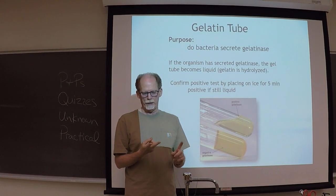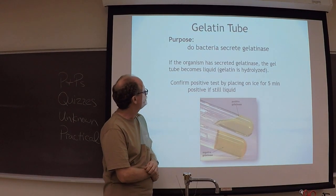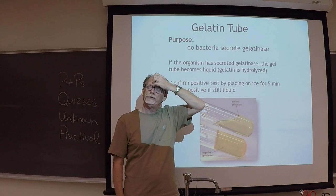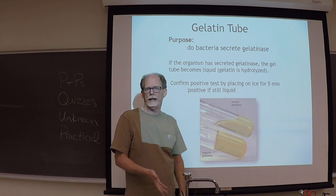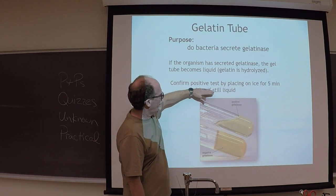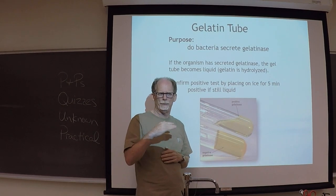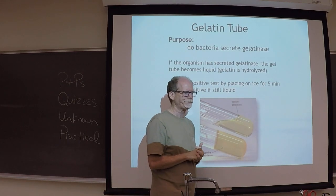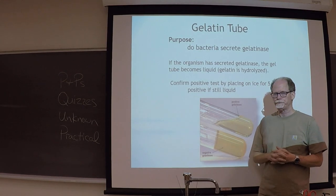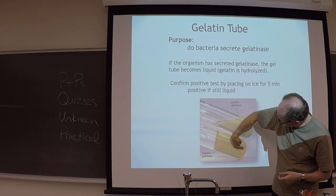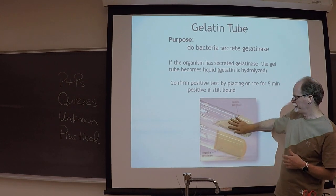There's no inhibitor and no indicator in this media. What indicates a positive result is liquefaction. If it turns liquid, you put it on ice for five minutes. If it's solid after that, it's negative. If it remains liquid after putting it on ice, it's positive — because temperature alone above 80 degrees can cause gelatin to become liquid. You inoculate the tube with a needle stab; the bacteria grow, secrete gelatinase, and the gelatin liquefies.